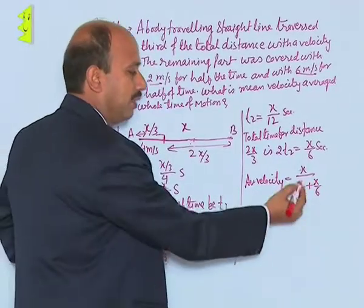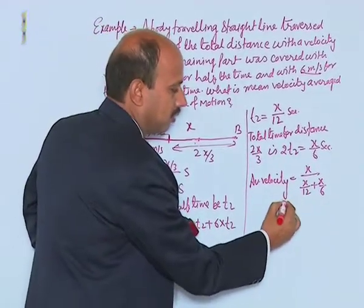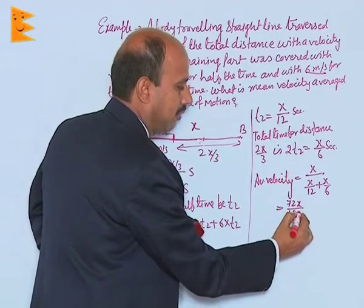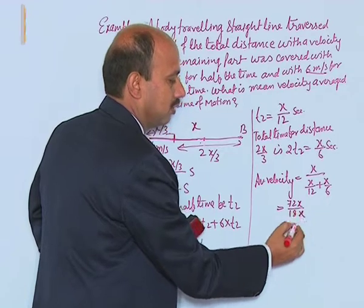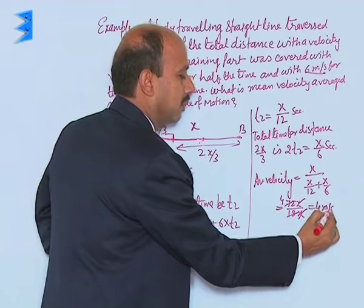When you solve it, you will be getting 72x divided by 18x. This x and x will get canceled. This is 4. You will be getting 4 meters per second.